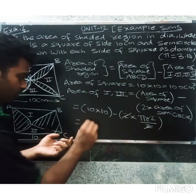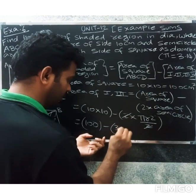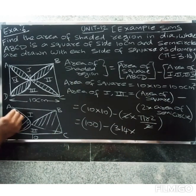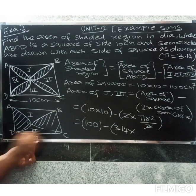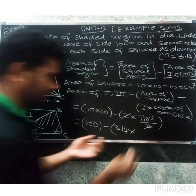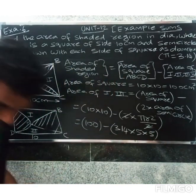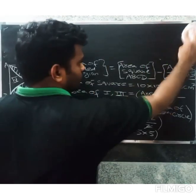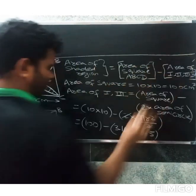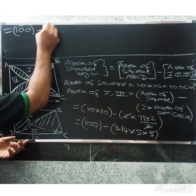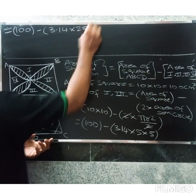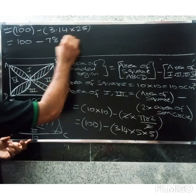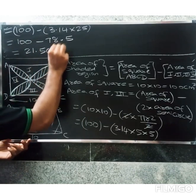The diameter is 10 cm, so the radius is 10 divided by 2, which is 5 cm. So the calculation is: 100 minus pi times r squared, where r equals 5. That gives 100 minus 3.14 into 25, and 3.14 into 25 equals 78.5.